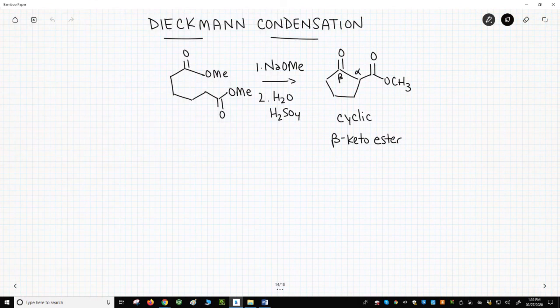What is a Claisen condensation? It involves the attack of an ester enolate as a nucleophile onto an ester carbonyl as an electrophile. The Claisen requires two esters, one as an enolate and the other as an electrophile.